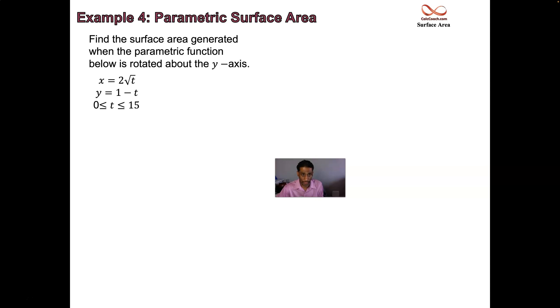Find the surface area generated when the parametric function below is rotated about the y-axis. The radius is equal to x, but we can't have x inside of a t integral, so we'll put in the f of t formula. So 2√t. Now you have to deal with this ds, this dx/dt quantity squared plus dy/dt quantity squared all underneath a radical, step by step.